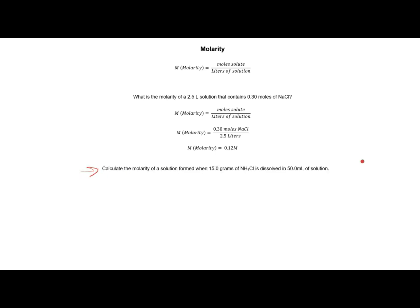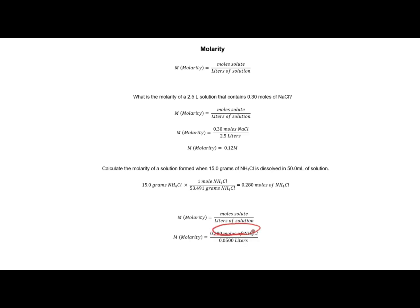Let's do another problem. Calculate the molarity of a solution formed when 15 grams of ammonium chloride is dissolved in 50 milliliters of solution. This is much more common — in the lab, you'll be measuring solutes in grams, not moles, and 50 milliliters is a reasonable amount. First, I convert 15 grams of ammonium chloride into moles using the molar mass, getting 0.28 moles. Then, plugging into the molarity definition and converting milliliters to liters, I get a molarity of 5.61 M.